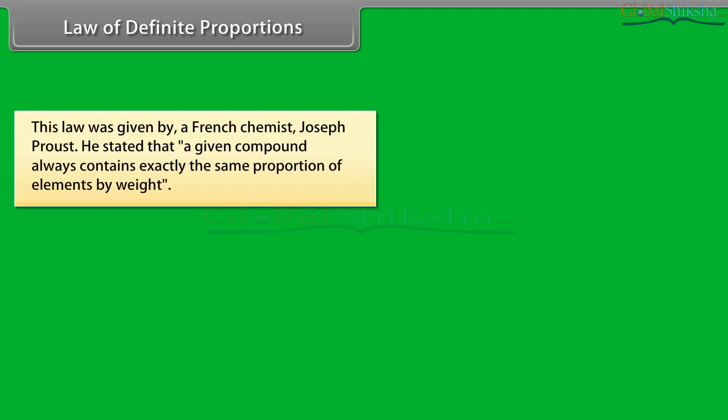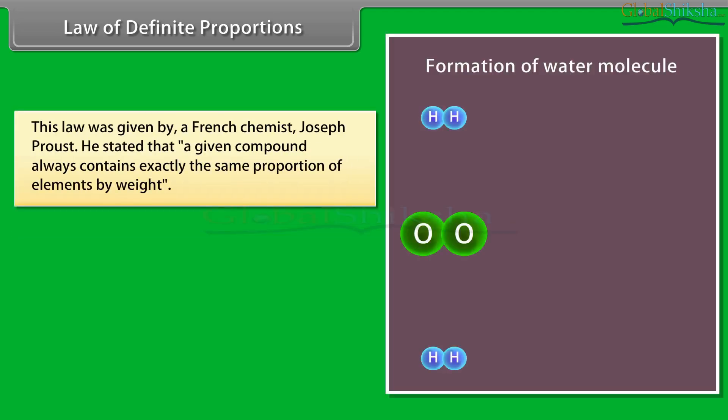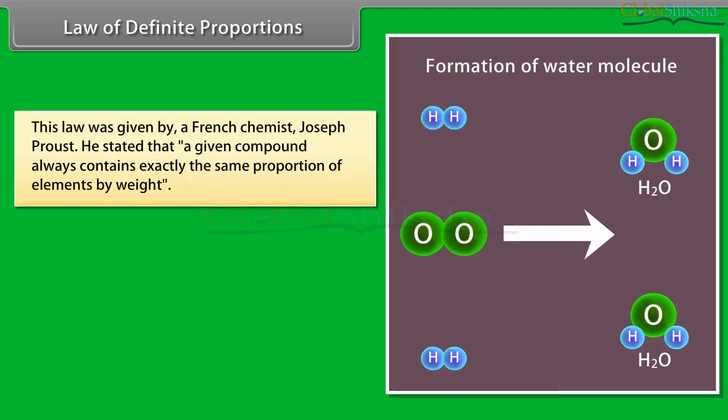Law of definite proportions: this law was given by French chemist Joseph Proust. He stated that a given compound always contains exactly the same proportion of elements by weight.